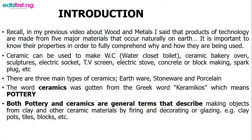I recall in my previous video about wood and metals, I said that the products of technology are basically made from five major materials that occur naturally on earth. It is important to know the properties of these materials in order to fully understand why and how they are used. Now, what is ceramics?